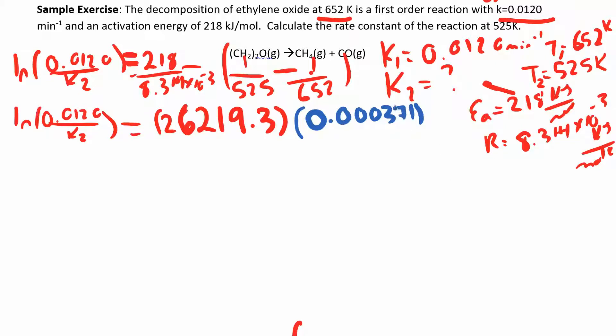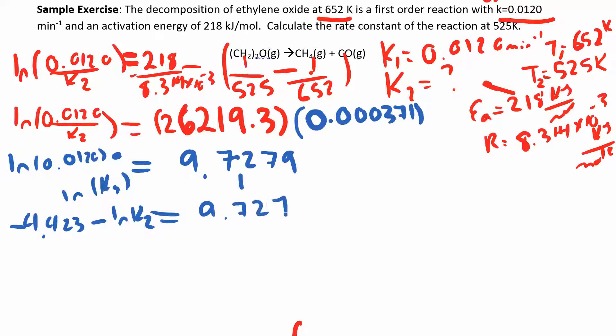If we simplify that a little bit, multiply those two together, we get 9.7279. And over here, we can split that log up if we want to. Natural log of 0.0120 minus the natural log of K2. We end up with negative 4.423 minus the natural log of K2 is 9.7279.